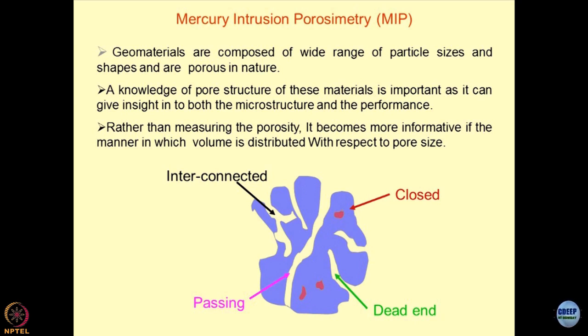We have dead-end pores, where the pore is well defined but fluid flow across the mineral cannot occur. We have interconnected pores forming a sort of network within the particle itself. There could also be through-and-through passing of pores — a pore passing through the grain itself. These types of pore arrangements and combinations exist in porous materials, creating a complicated situation where you need to find pore structure and pore size distribution.